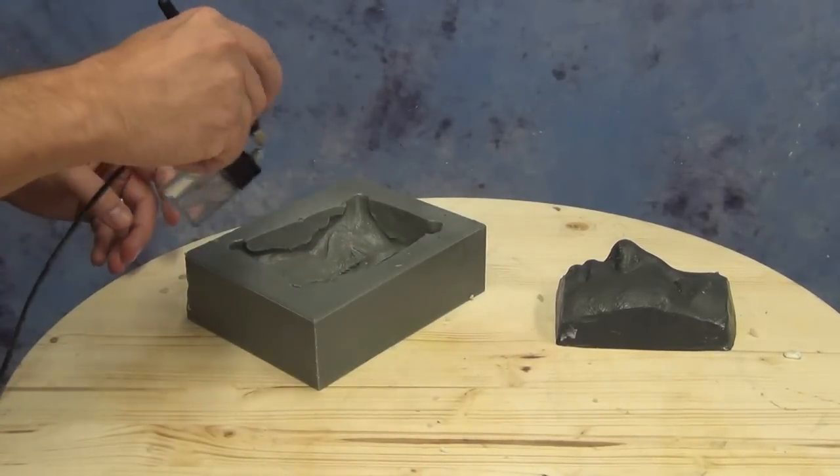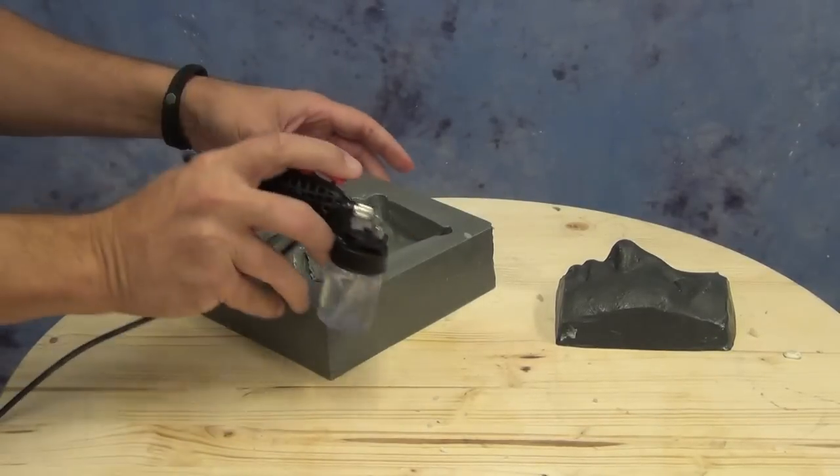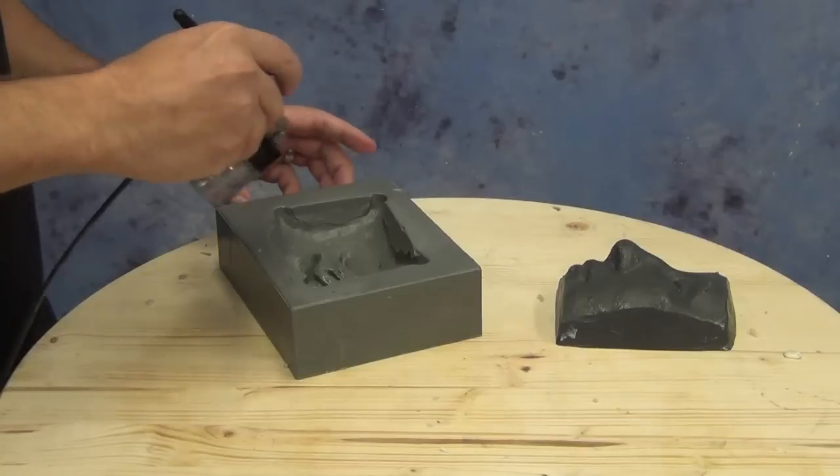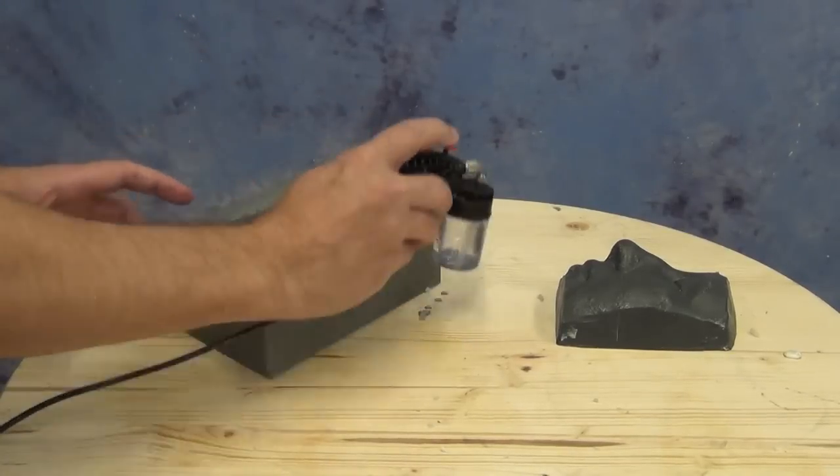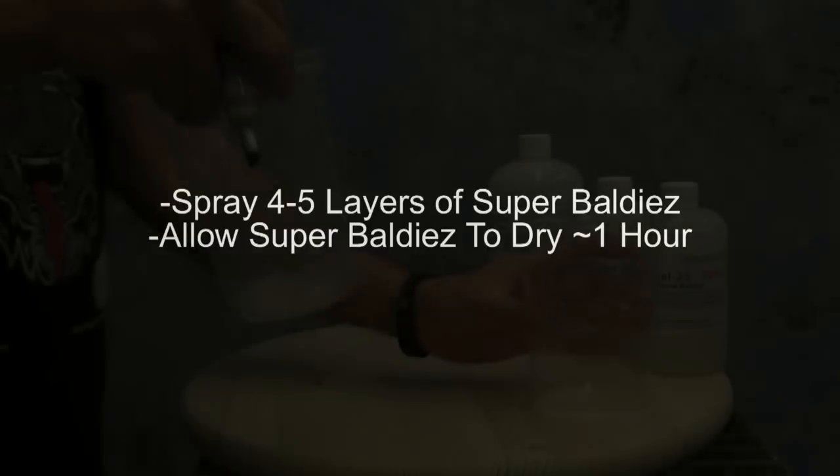Apply the cap plastic to the negative mold only—you'll need about four to five layers total. What you're seeing here is just one layer that needs to be repeated four to five times. Check your thickness afterward to ensure it's adequate. Allow the cap plastic to dry at least an hour before casting to prevent alcohol from interfering with the Gel 25's cure.